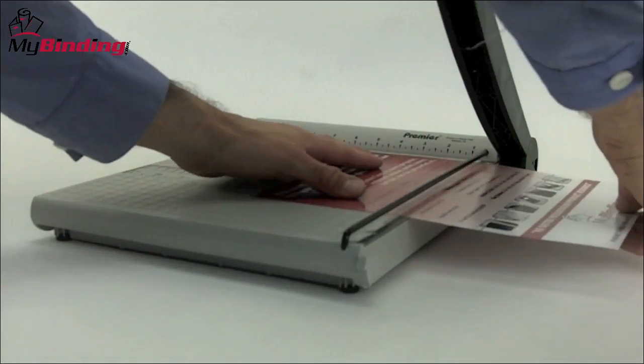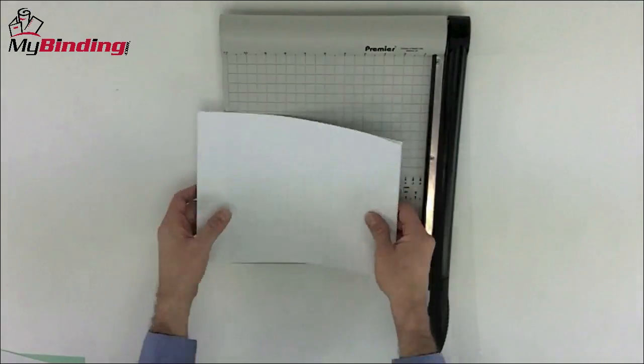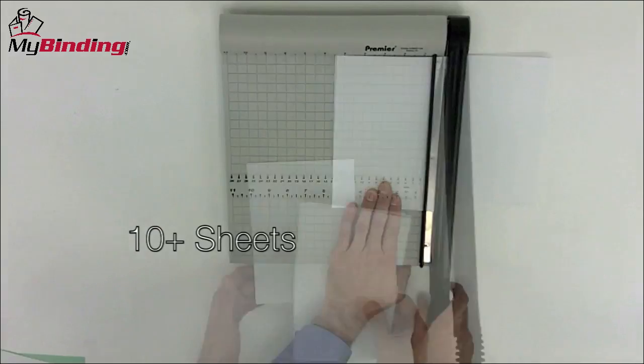Slide your project under the fence guard and make your cut. P212 claims to cut 10 sheets of 20-pound paper per trim. We found we could do more.